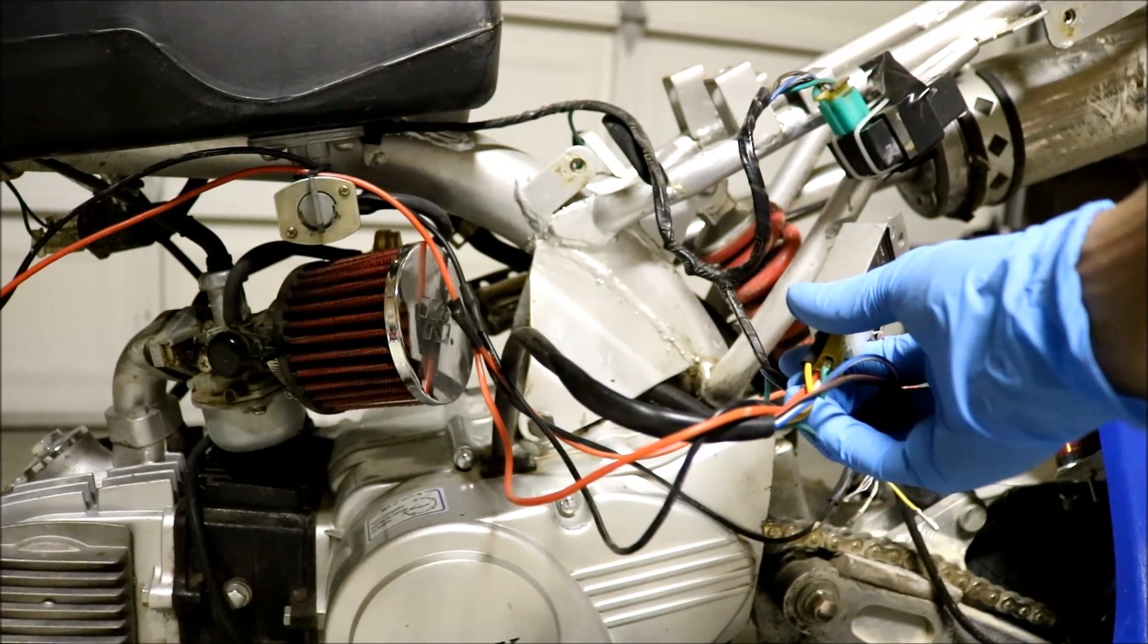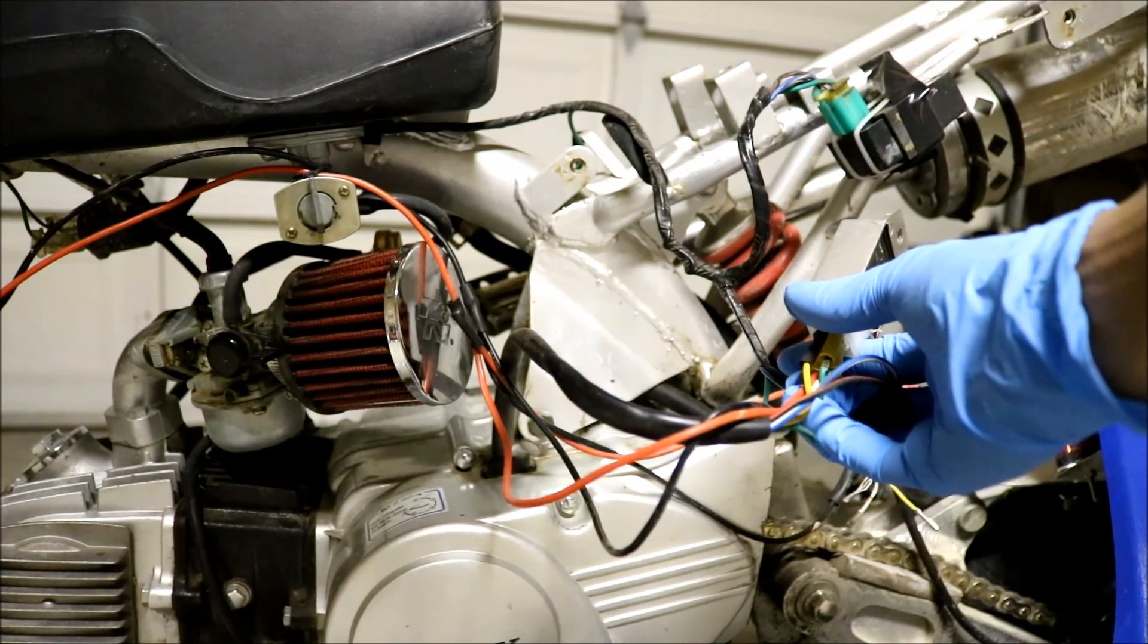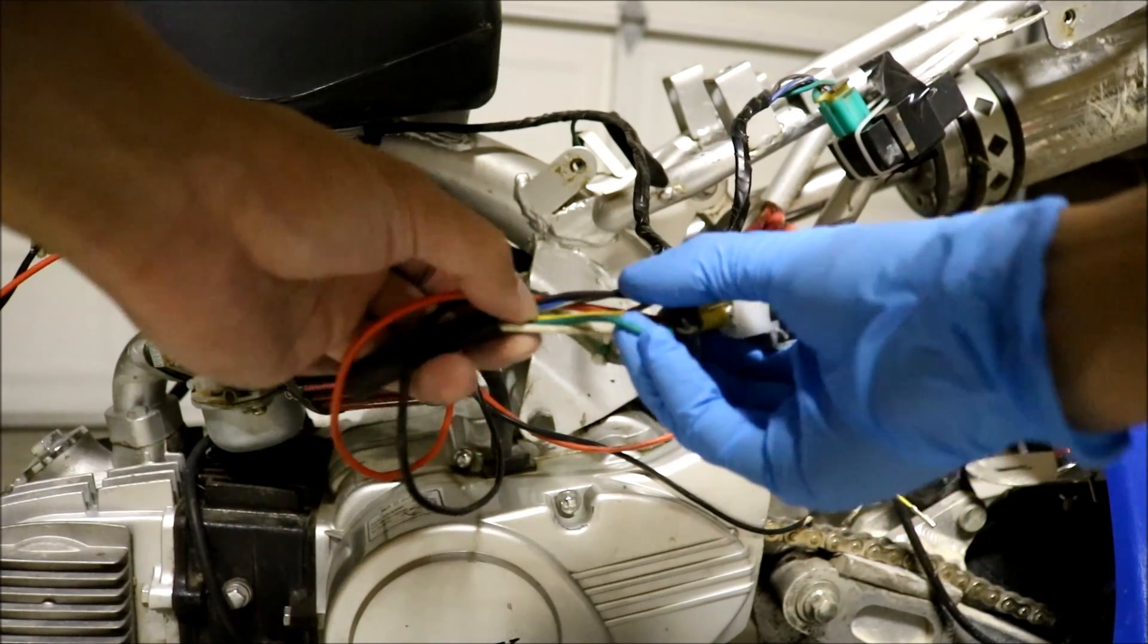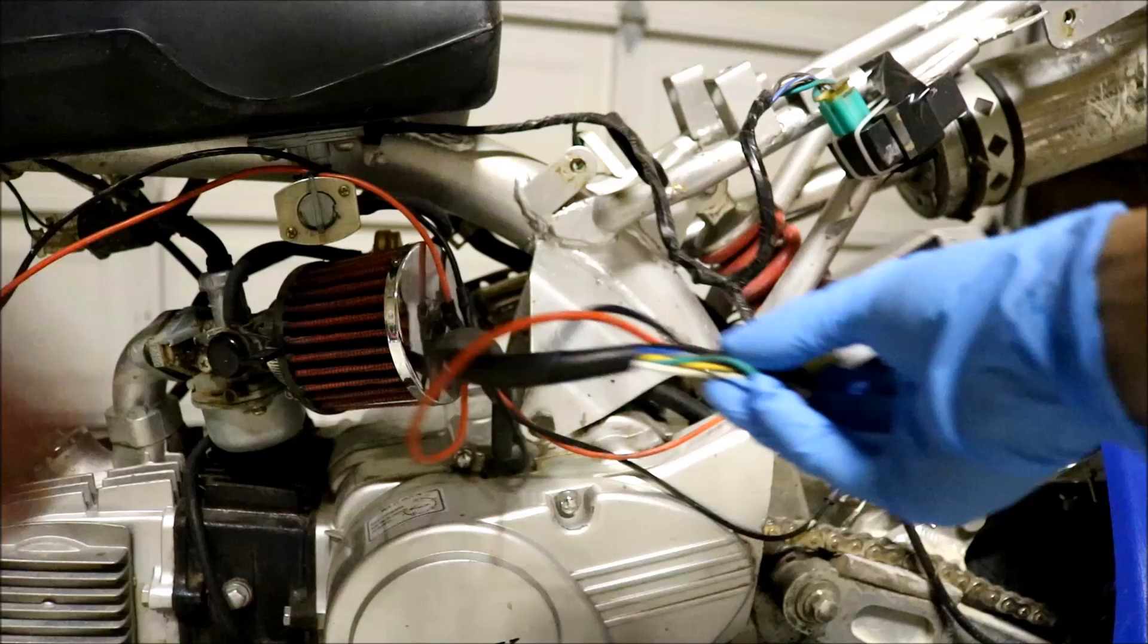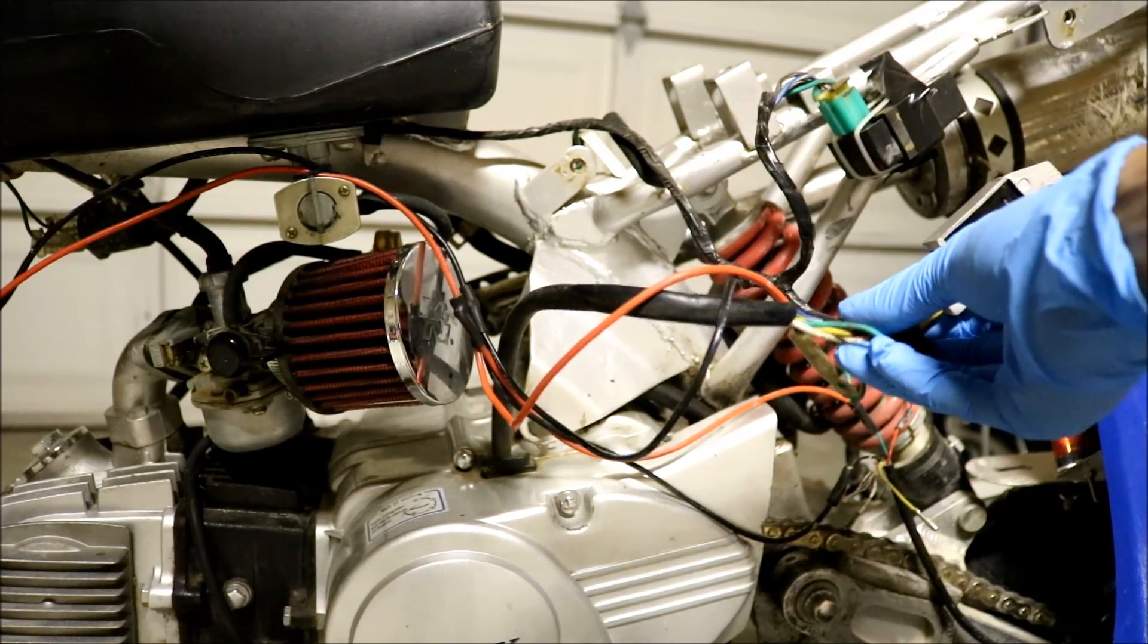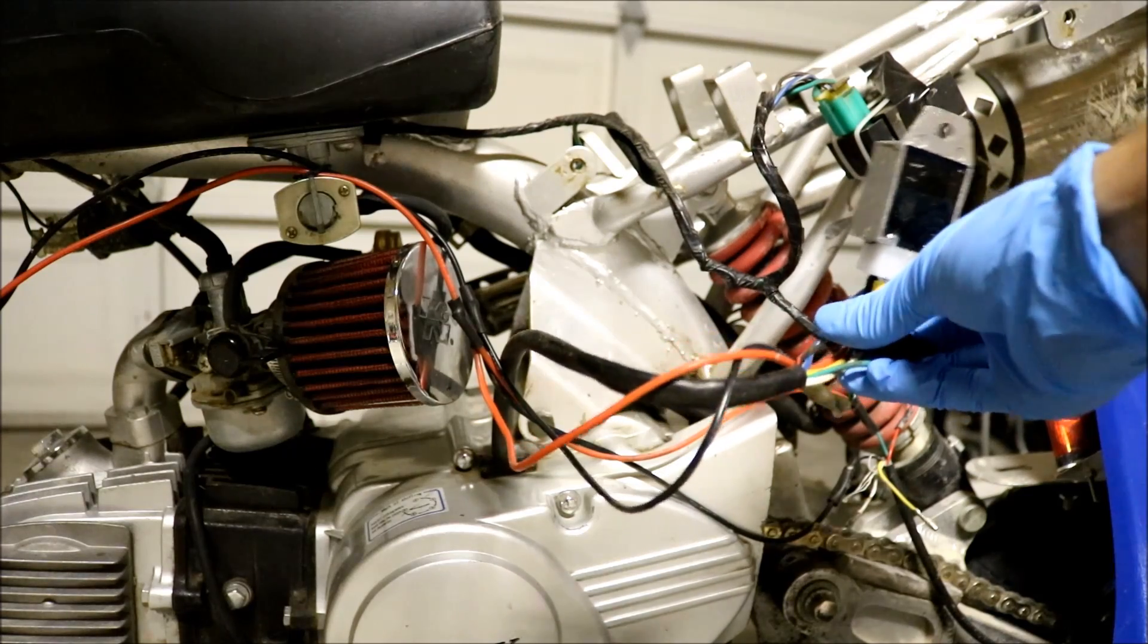So the last video I made about adding lights to my pit bike, I know I didn't go into depth about the wires because it wasn't really a tutorial. But I'm getting a lot of questions on how it's wired, so I thought I'd make a better video on how I did it on my pit bike.